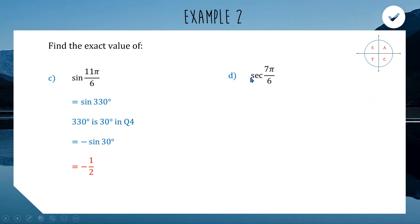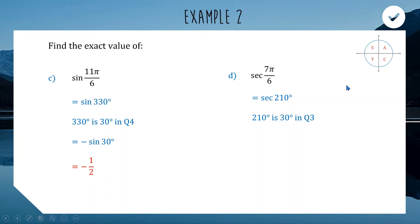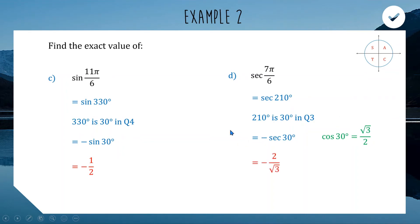Now sec(7π/6): π/6 is 30 degrees, times 7 gives 210 degrees. Sec is cos flipped upside down. 210 is in quadrant 3, 30 degrees past 180. In quadrant 3, cosine is negative, so sec is also negative. Cos(30) = √3/2, so sec(30) = 2/√3. Making it negative: our final answer is −2/√3.